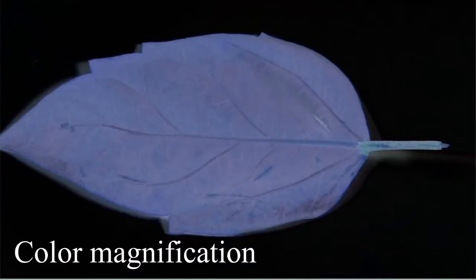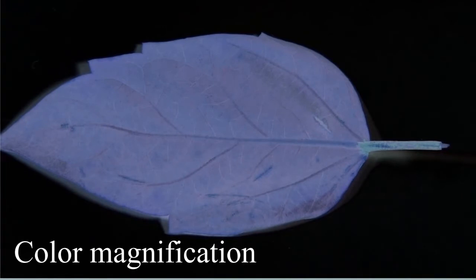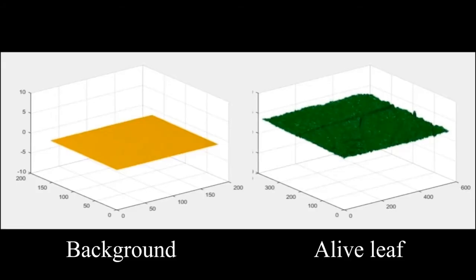As shown, observable changes in the live leaf colors can be seen. The color of the live leaf oscillates in a noticeable manner compared with the color of the background.